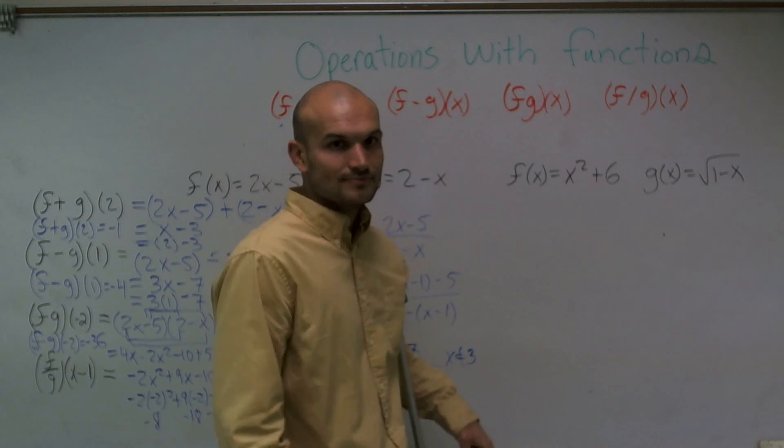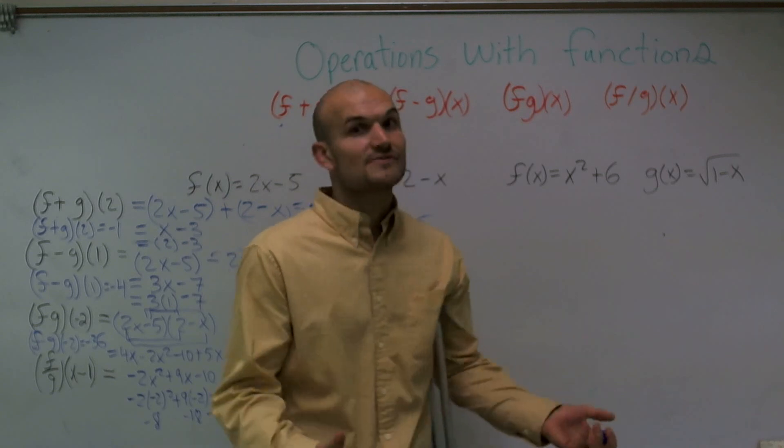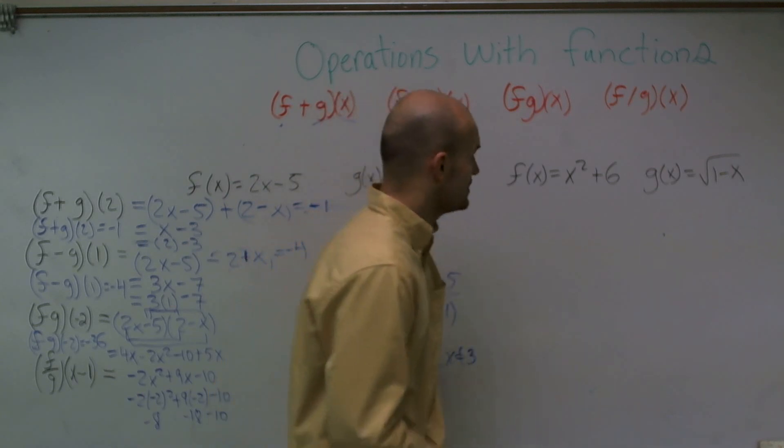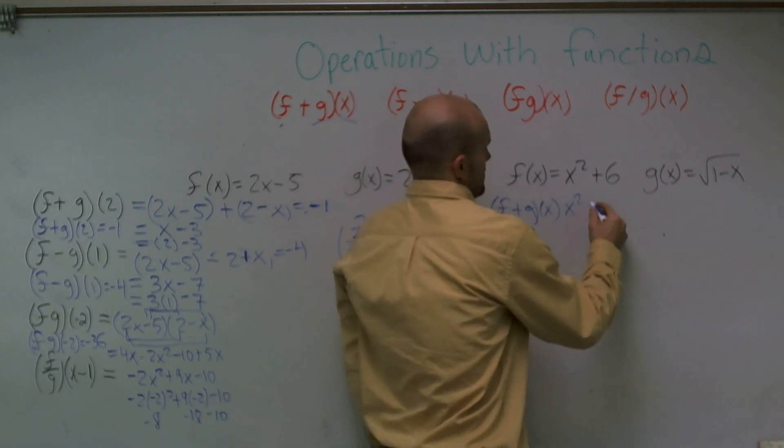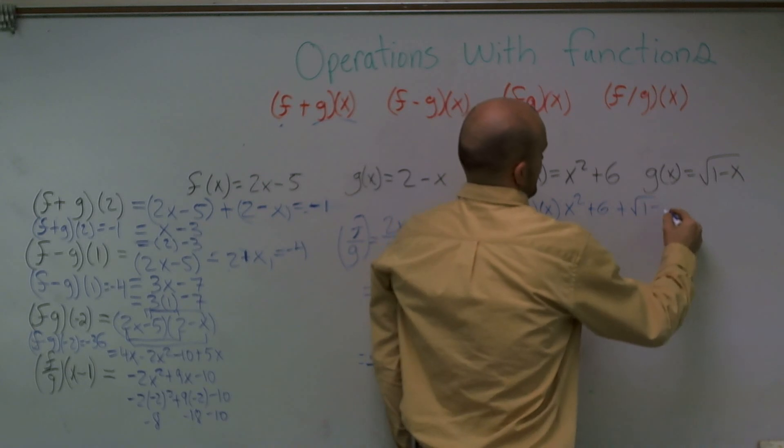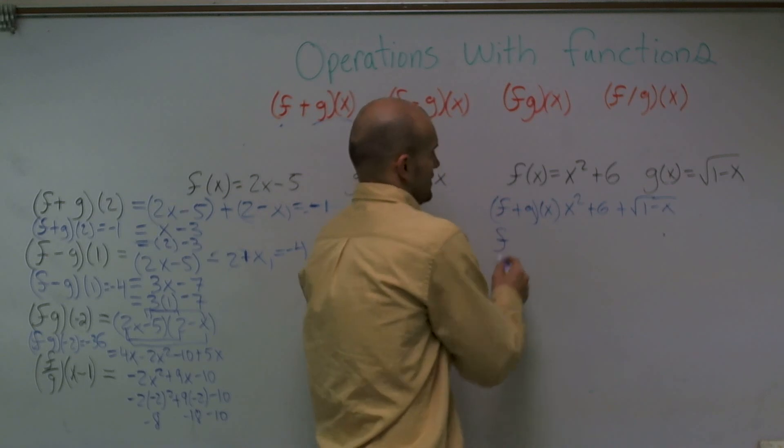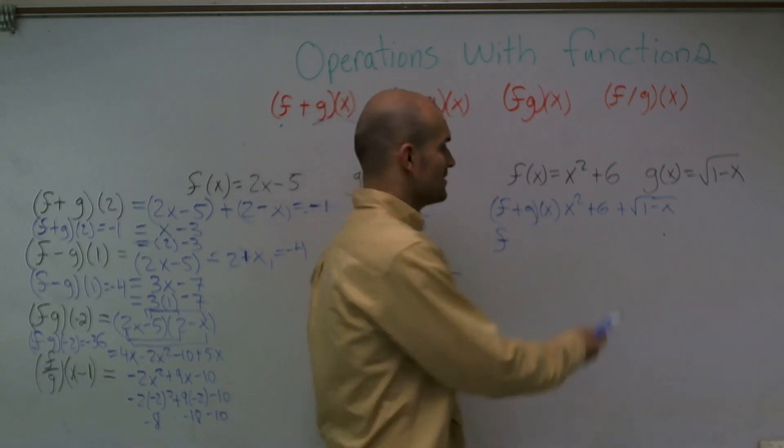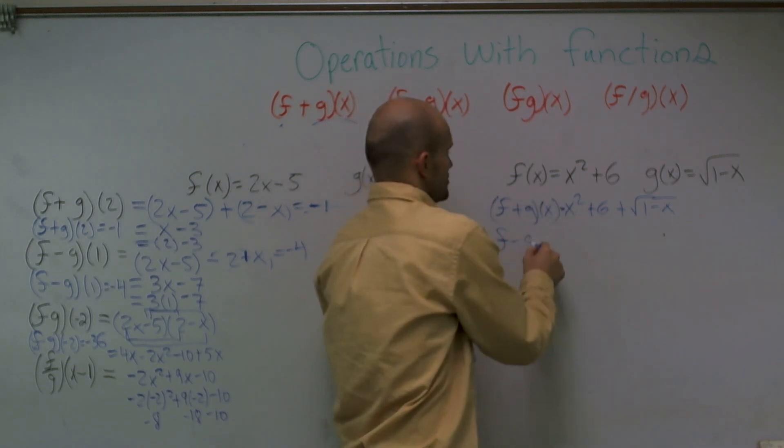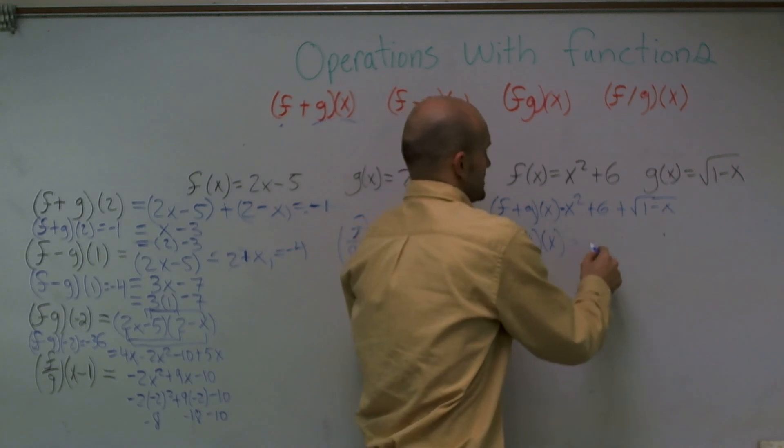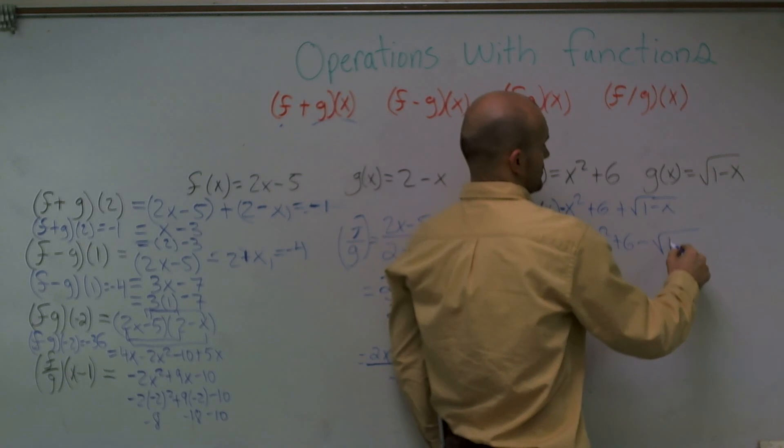All right. So here. Now in our last one, we have f of x equals x squared plus 6, and then we have g of x equals square root of 1 minus x. Now this is very similar to the other one that we worked on. So my addition is going to be very easy. Again, since they're not like terms, you really can't do anything with them. If I had to evaluate, which I told you not to, but if you did evaluate, you could do the exact same thing. Whatever number is in here, you just plug it in.